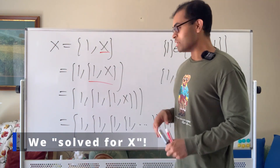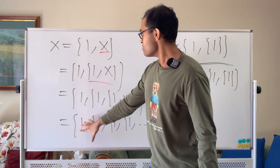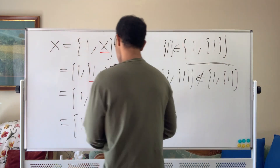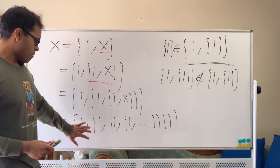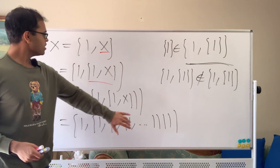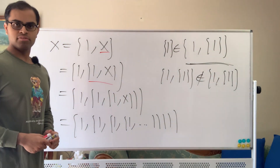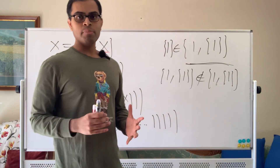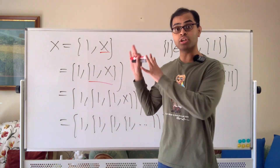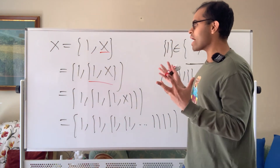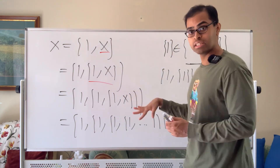And that set x is a member of itself, because if you remove the first element, you get back x. So x is a member of itself. It's a weird set, but in set theory there are axioms that preclude this — it's called the regularity axiom. It precludes sets from being members of themselves, and it doesn't allow constructions like this. So there are a number of ways of handling Russell's Paradox.